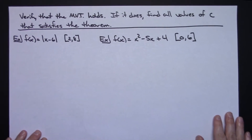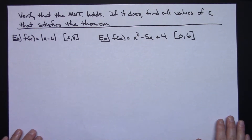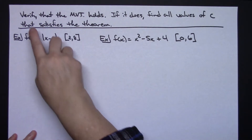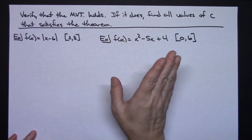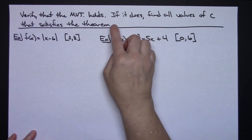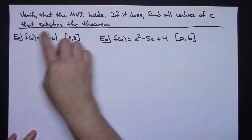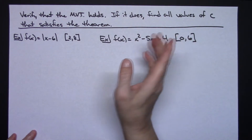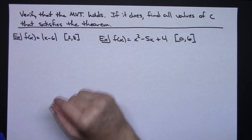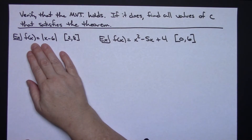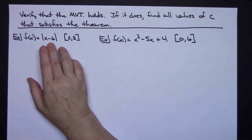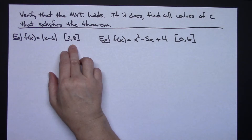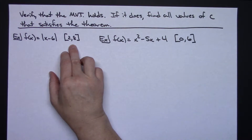Now let's do a couple of examples. The directions tell us to first verify that the mean value theorem holds — you should do that first anyway — and if it does, find all values of c that satisfy the theorem. On this first example, I've got f of x equals the absolute value of x minus six on the closed interval from two to eight.